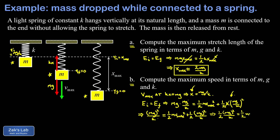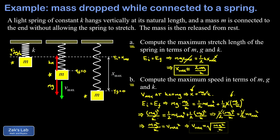Multiplying both sides by 2 eliminates the one-half factors. Dividing by M reduces M squared to a single M on the left, giving MG²/K equals V_max squared. Taking the square root, V_max equals the square root of MG²/K. If preferred, you can pull the G squared out of the square root and write it as G times the square root of M over K.